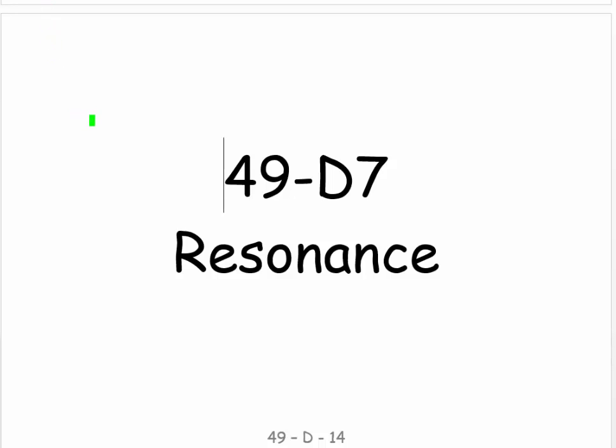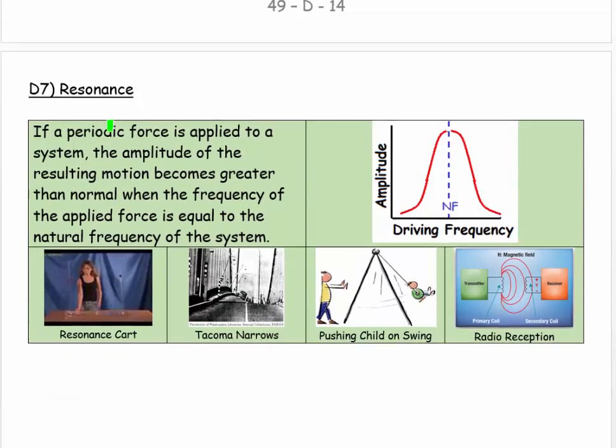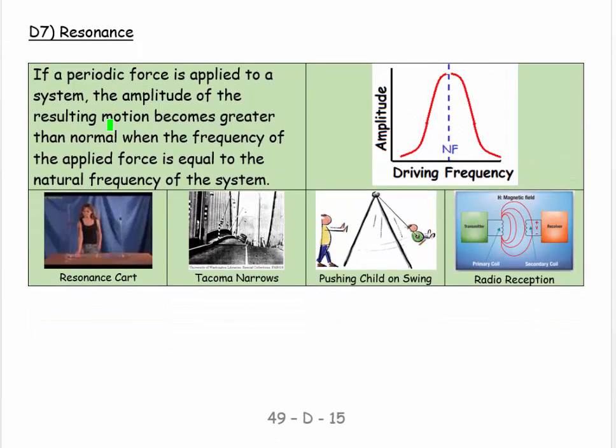Welcome, this is 49D7 and now we're going to talk about a thing called resonance. Resonance occurs when you drive an oscillator at its natural frequency. If a periodic force is applied to a system, the amplitude of the resulting motion becomes greater than normal when the frequency of the applied force is equal to the natural frequency of the system.